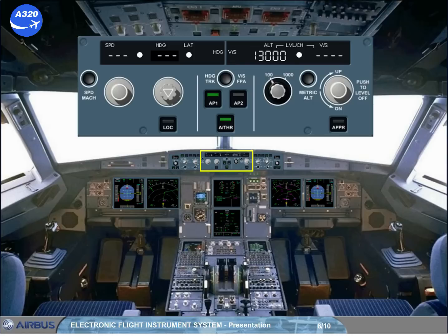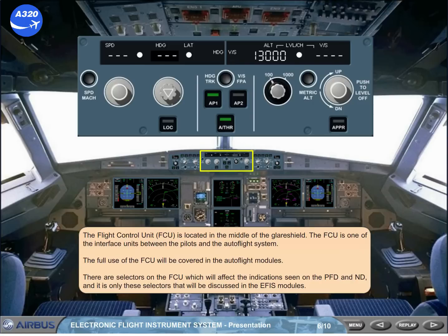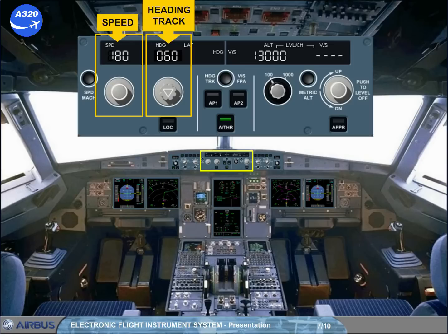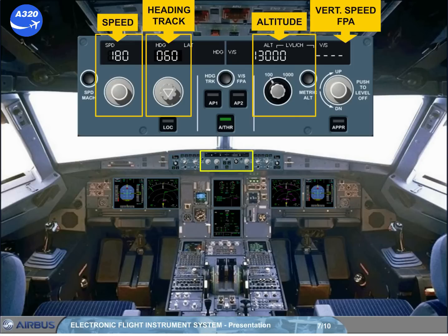It is only the selectors that affect the indications seen on the PFD and ND that will be discussed in the EFIS modules. The selectors with associated indications are provided for speed, heading track, altitude, and vertical speed flight path angle, FPA.